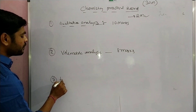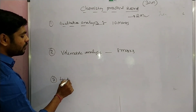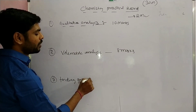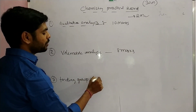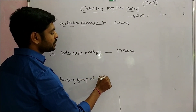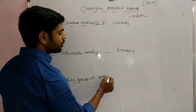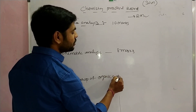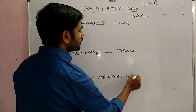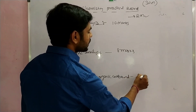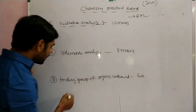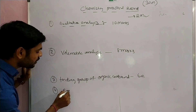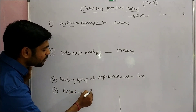The third component is finding the functional group of an organic compound. The organic compound finding carries 6 marks overall. After that, the fourth step is record marks, which are 2 marks.